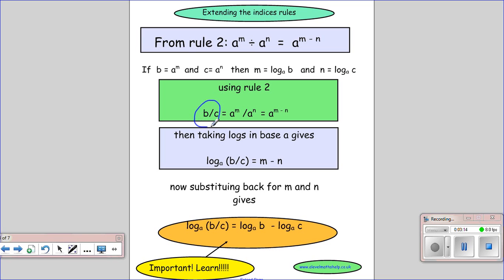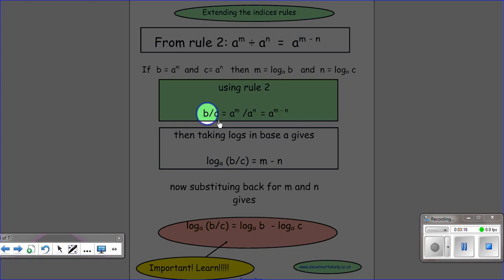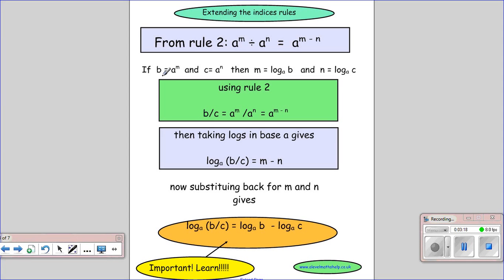Then we're going to take b divided by c. So we take b from here and c from there. So we have a to the m over a to the n. And then using our rule, we know we can take away the powers.